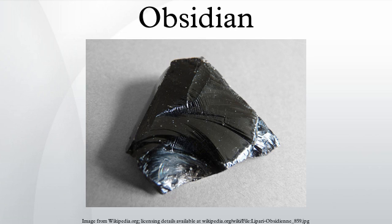Obsidian cores and blades were traded great distances inland from the coast. In Chile, obsidian tools from Chaitén Volcano have been found as far away as Chan Chan, 400 km north of the volcano, and also in sites 400 km south of it. On Easter Island (Rapa Nui), obsidian was also used for edged tools such as mataa and the pupils of the eyes of their moai.